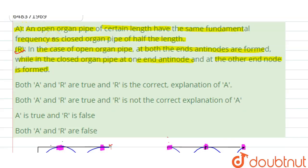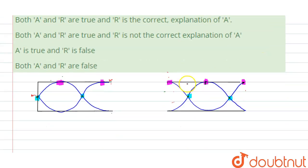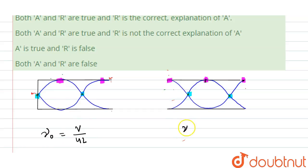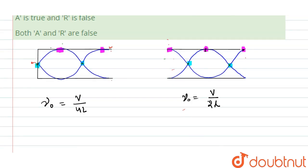Let us now focus on the assertion. For the fundamental frequency, in the case of a closed organ pipe, the fundamental frequency f₀ equals v divided by 4L. And in the case of an open organ pipe, the fundamental frequency equals v divided by 2L.